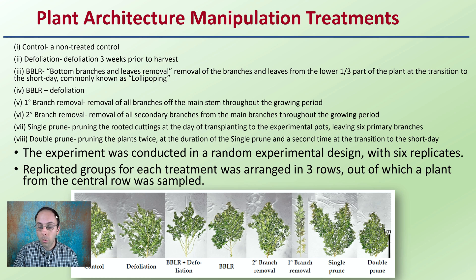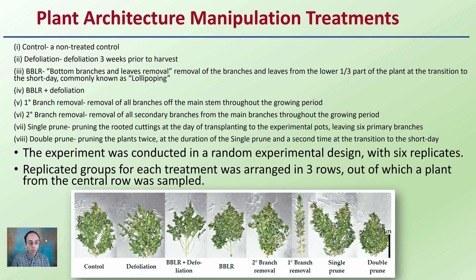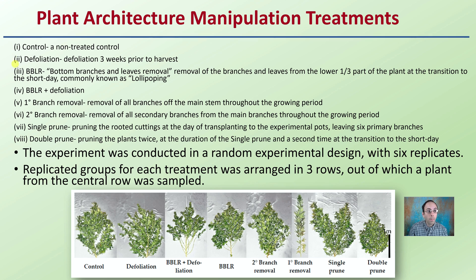Here's the description of some of their pruning methods — they're quite extensive, which is great. They have a control and a defoliation. BBLR is bottom branches and leaves removed, commonly referred to as lollipopping. So where you see BBLR, you can think of that as lollipopping. Then they have primary branch removal, secondary branch removal, single prune, and double prune.